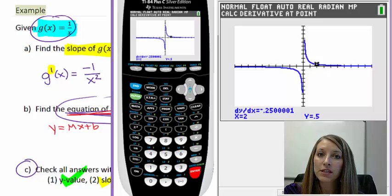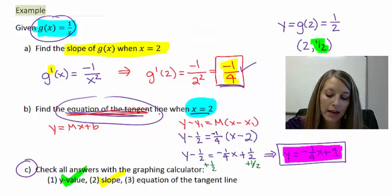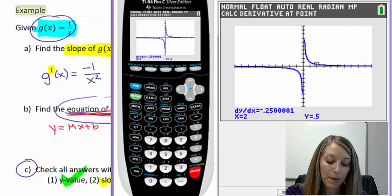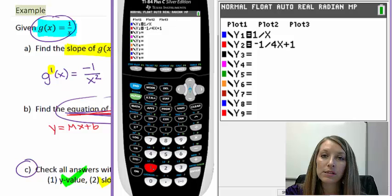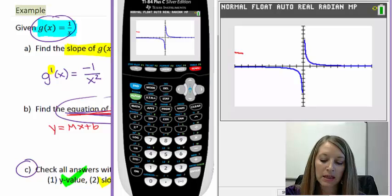It should briefly touch that graph and follow the graph at that point, but not do anything else crazy along the way. The way that we check this specific tangent line is we take our equation and we substitute it in for the y equals. We're going to substitute it in for the second y equation. I type in my negative one-fourth x plus one because that was the equation of the tangent line that we came up with.